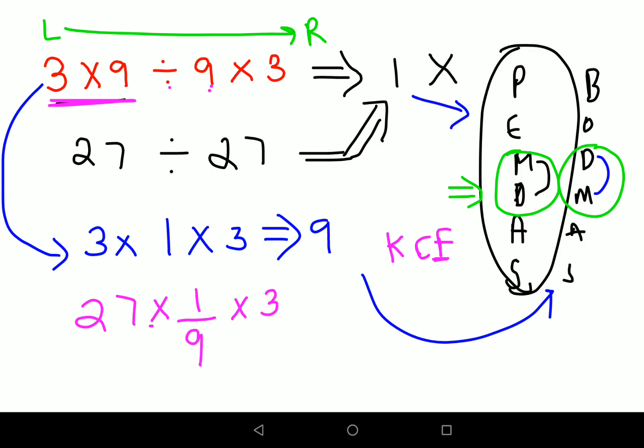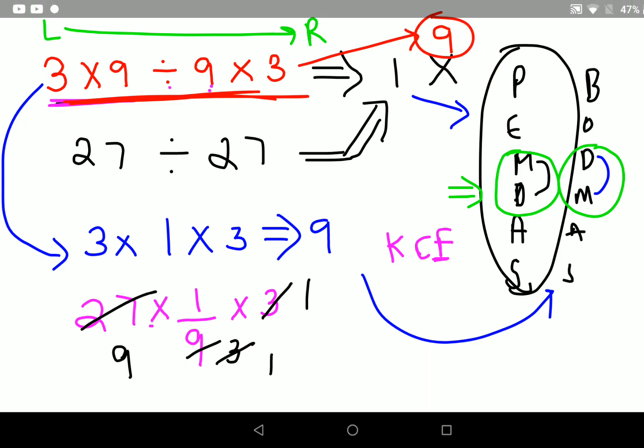Now in this case what happens is, you can cancel 1s, 3s, 1s, 9s. So now the answer for this particular question is just 9. I hope you all have understood how to do this.